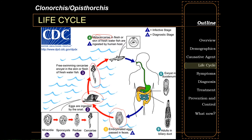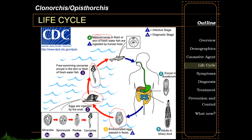Inside the snail, the parasite develops into miracidia, sporocysts, rediae, and cercariae. Eventually the cercariae are released from the snail — and as a sad note, this release actually kills the first intermediate host. The cercariae swim around in freshwater until finding the second intermediate host: the freshwater fishes. Inside these fishes, they migrate into the muscles and under the scales and encyst into metacercariae, which is the infective stage of Clonorchis or Opisthorchis.